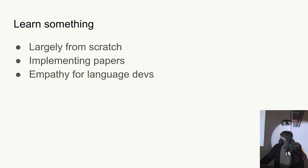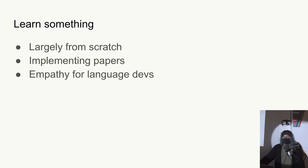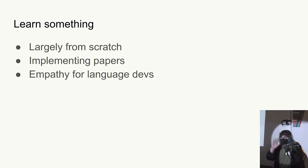Something I learned kind of on accident was empathy for language developers. There's a lot of syntactical ambiguity — like, why do we have semicolons? Turns out writing error messages without them is really hard. And error messages generally — getting good error messages out of a compiler is a total nightmare. You'll see later that FELT's error messages are like three words long, and even that was, in my opinion, a pretty big win. So I have a lot of empathy for best-in-class programming languages with really good error reporting.